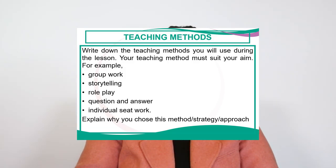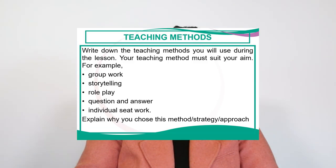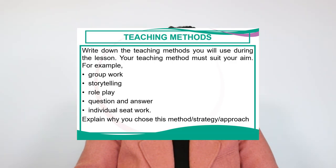Then the teaching method — what kinds of methods do you want to use in that lesson? Remember that the methods should suit the aim you have chosen. For example, you might use group work, storytelling, role play, question and answer, or individual seat work. There is a space where you explain why you chose those particular methods. You may use more than one method in one lesson.